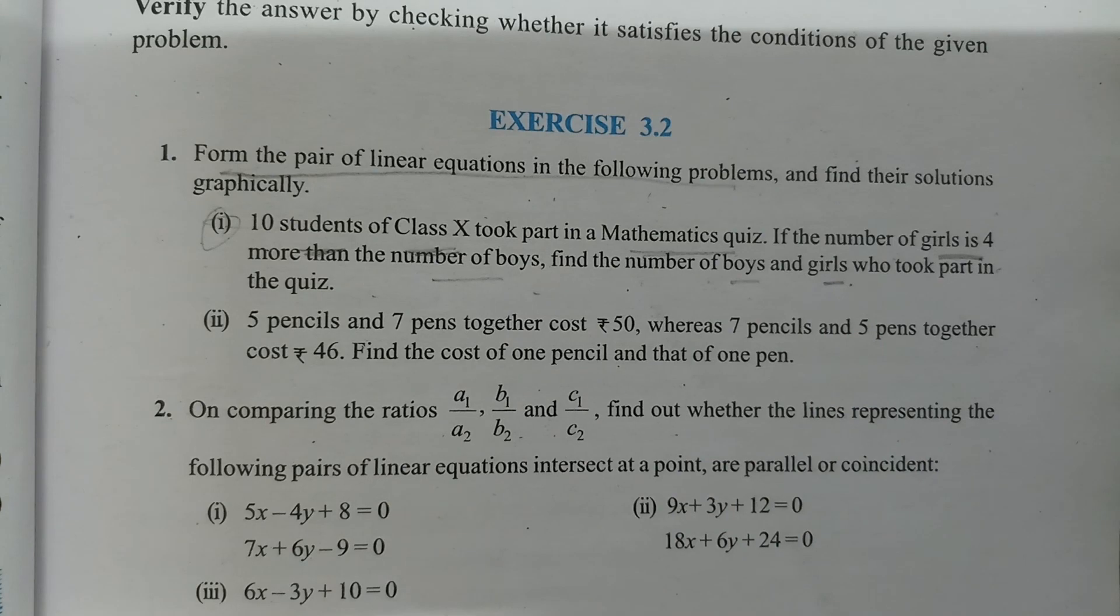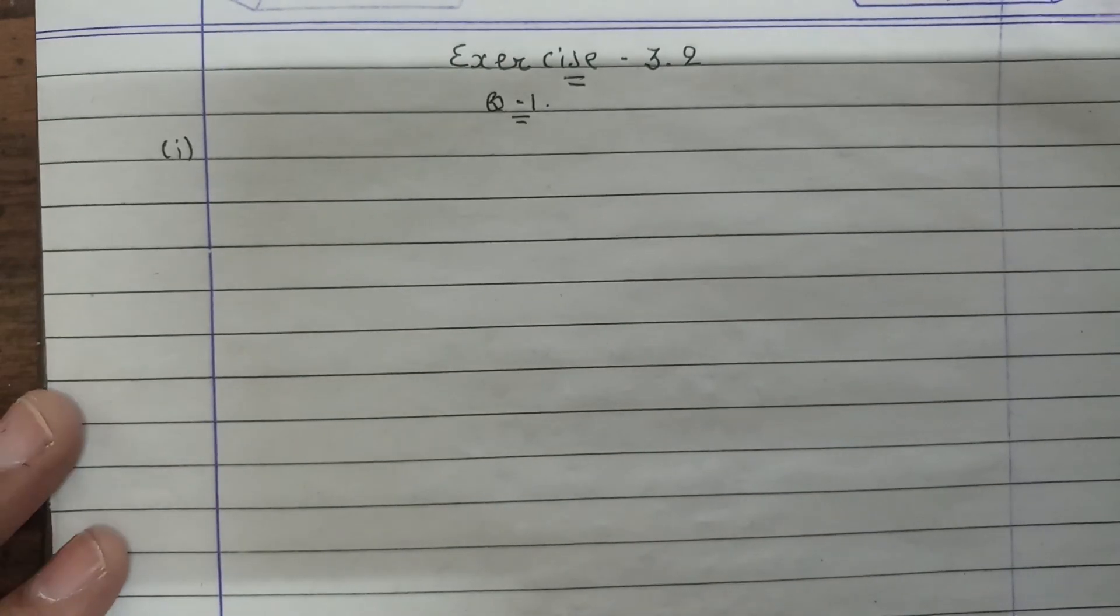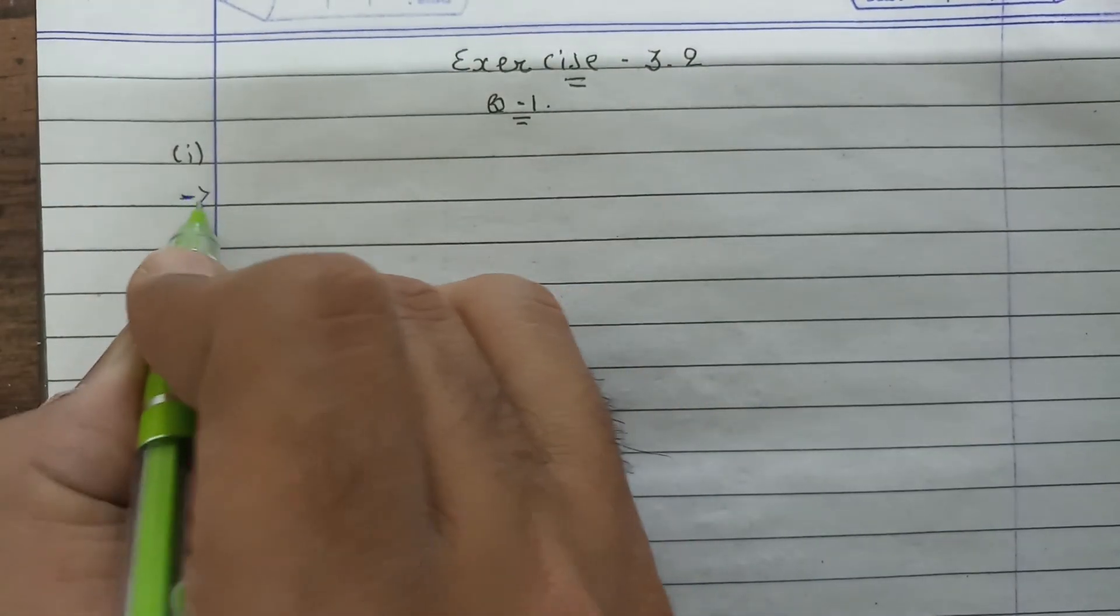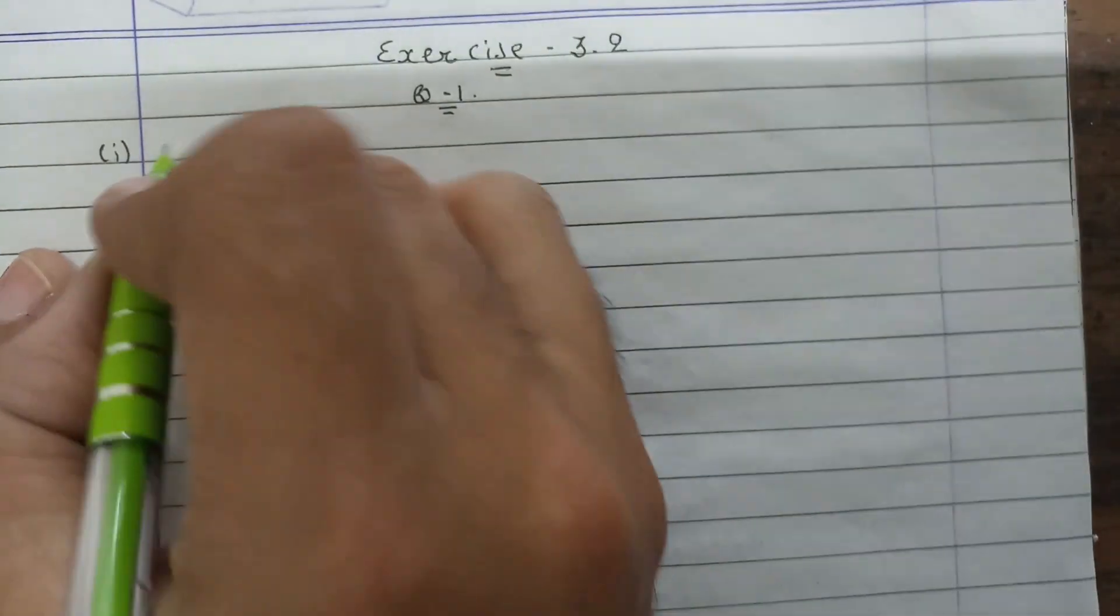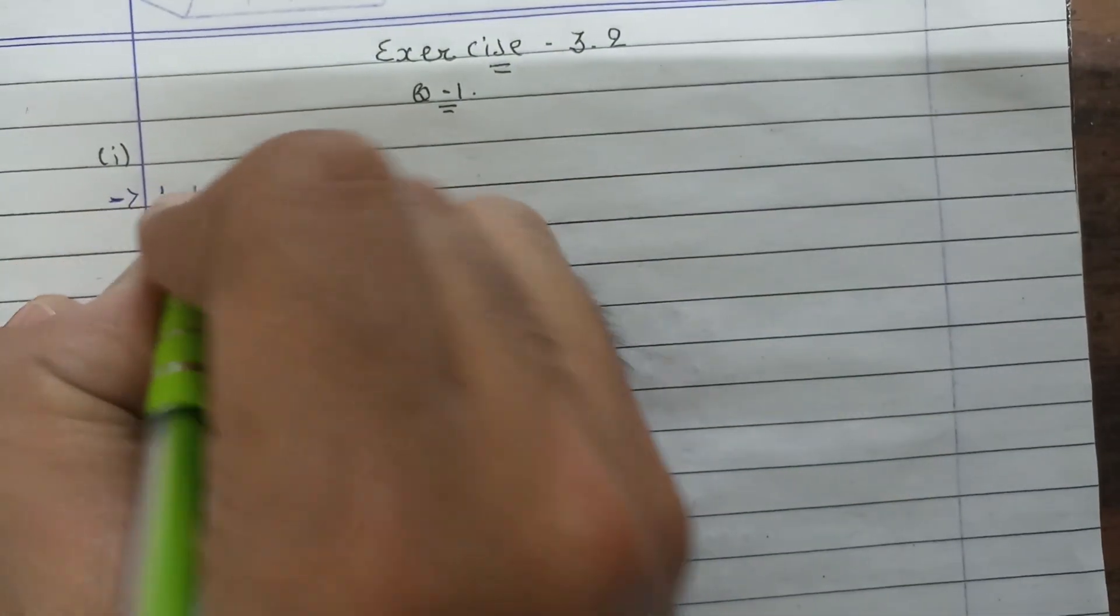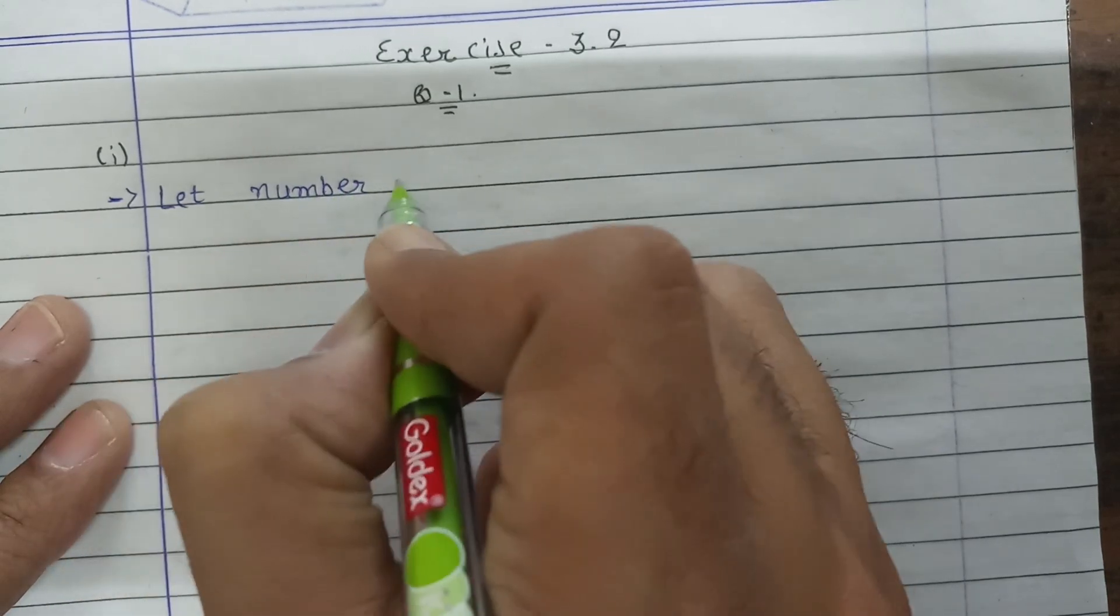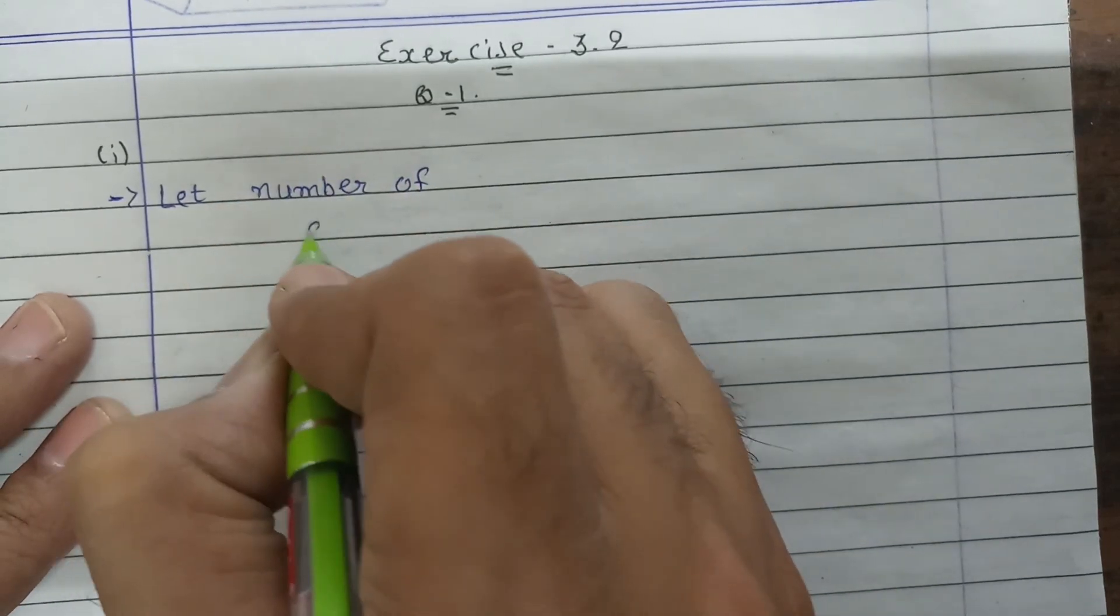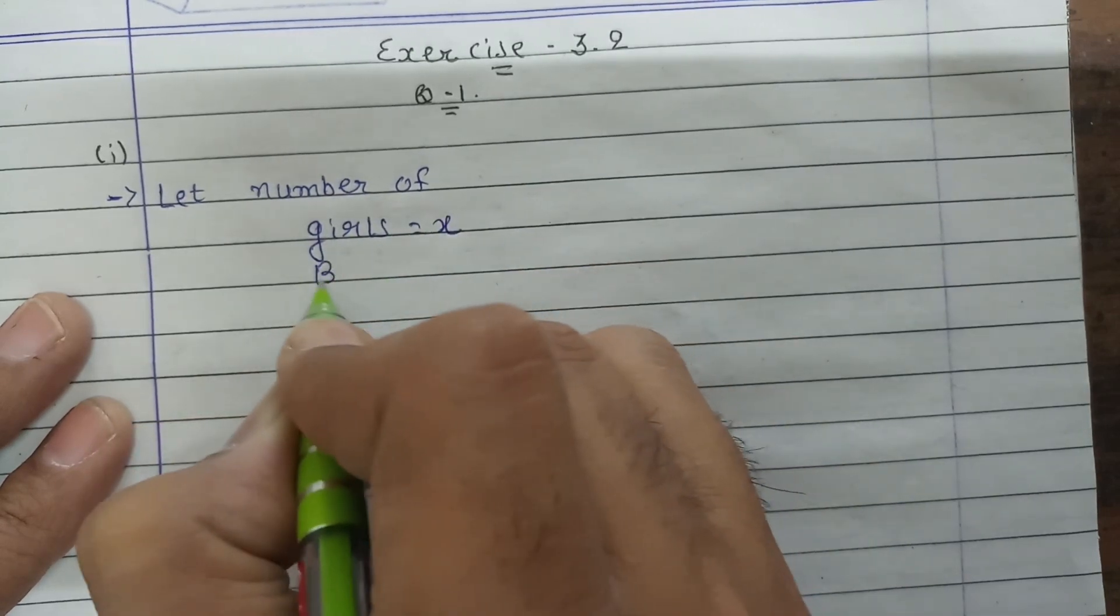For this we need to prepare equations. Let's see how to make it. First of all, we assume that the number of girls is equal to x and the number of boys is equal to y.